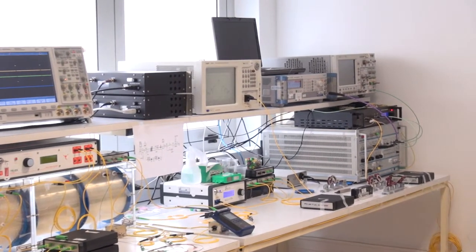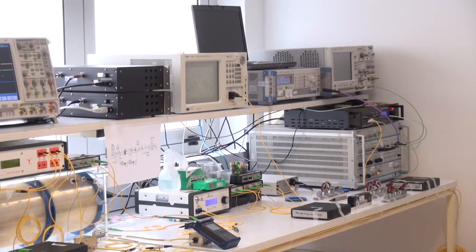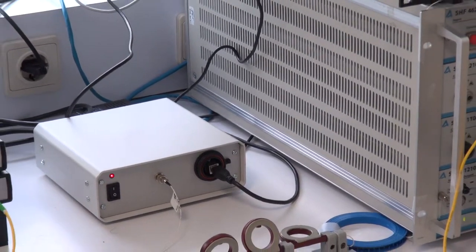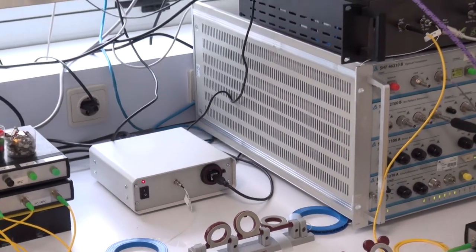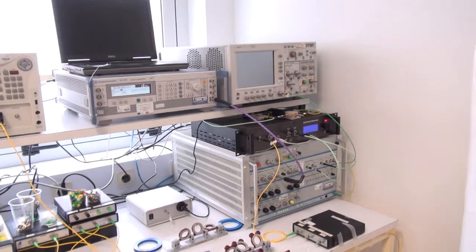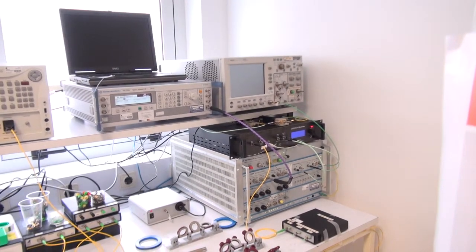Here is the transmitter part of our setup in the optical laboratory. The CW signal is injected to the IQ modulator. IQ modulator is modulated by 25 gigabit signal generator. Now we have 50 gigabit per second QPSK.